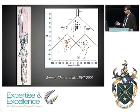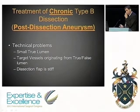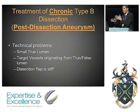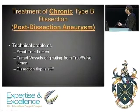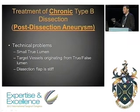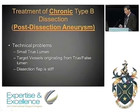Another important application is chronic type B dissection — patients who have a post-dissection aneurysm, usually years after the initial type B dissection that was treated medically or with proximal stent grafting. This is a very difficult category: patients usually present with a fairly small true lumen, target vessels can originate from both the true and false lumen, and the dissection flap — easy to handle in the acute situation — has now become fairly stiff and difficult to manage.